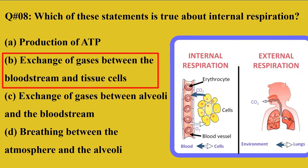The right option is B, exchange of gases between the bloodstream and tissue cells. External respiration takes place between the lungs and the environment — we take oxygen from the environment, it enters the blood through the alveoli, and carbon dioxide enters the alveoli from the blood, then is exhaled. In internal respiration, oxygen in the blood is taken to different tissues and cells, given to the cells, and the waste product carbon dioxide enters the blood, which carries it back to the lungs. This exchange of gases between the bloodstream and tissue cells is known as internal respiration.